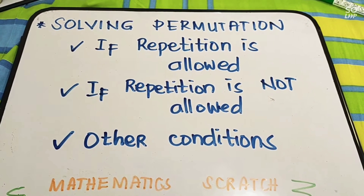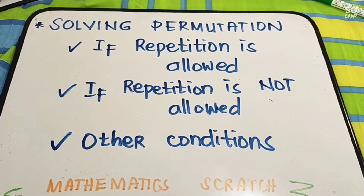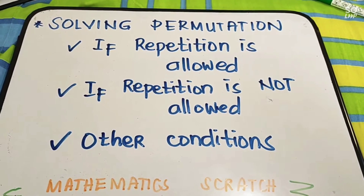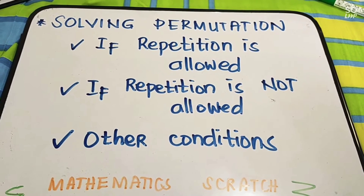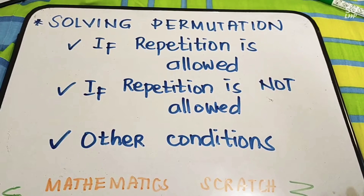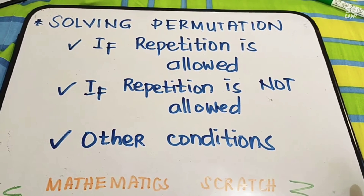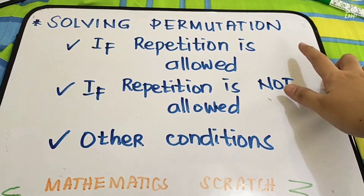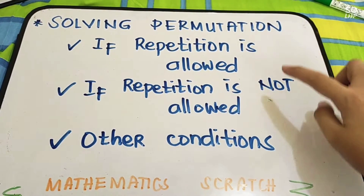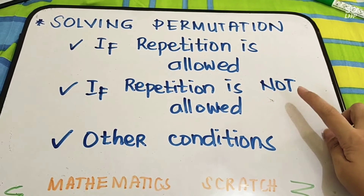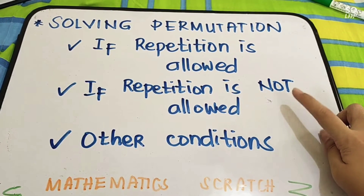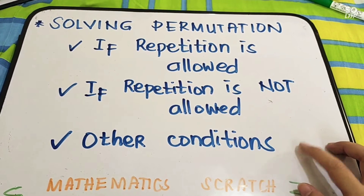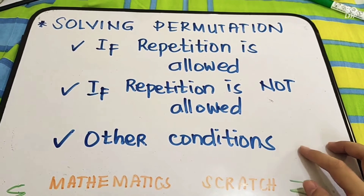Hi guys! Let us solve problem solvings involving permutations given the following situations: the first one, if repetition is allowed; the second one, if repetition is not allowed; and the third one, we have other conditions.